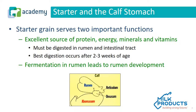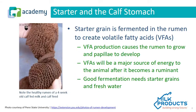Starter grain serves two important functions. It's an excellent source of protein, energy, minerals, and vitamins, but it must be digested in the rumen and the intestinal tract. The best digestion occurs after two to three weeks of age. Fermentation of the starter in the rumen leads to rumen development. Starter grain is fermented in the rumen to create volatile fatty acids, which have a direct effect on the growth of papillae — the functional surface of the rumen. Volatile fatty acids will be a major source of energy to the animal after it becomes a ruminant.